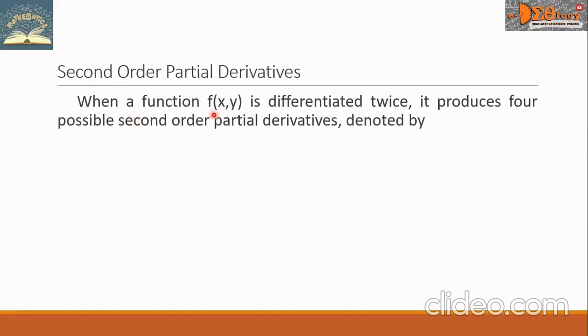When a function f is differentiated twice, it produces four possible second order partial derivatives.